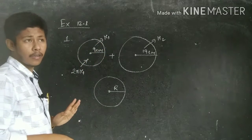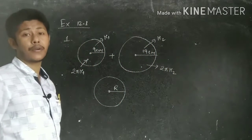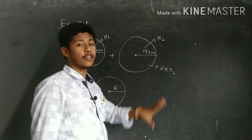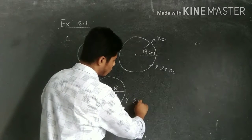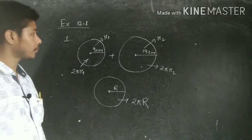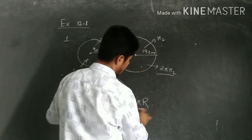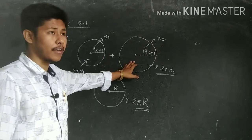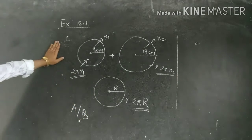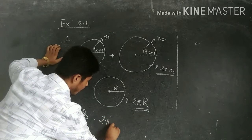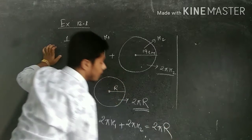The radius r1 is 9 cm, so the circumference is 2π r1. Similarly, r2 is 19 cm, so the circumference is 2π r2. For the third circle, the circumference is 2π r. According to the equation: 2π r1 + 2π r2 = 2π r.